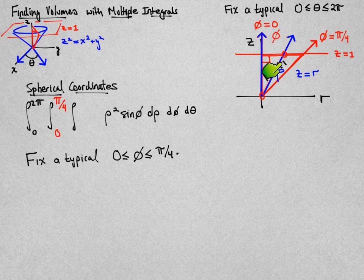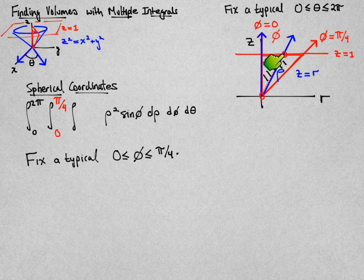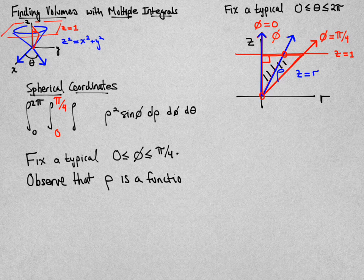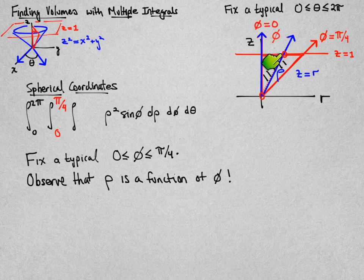That point, that distance there, is going to depend on what the current value of phi is. So the most important thing here to observe is that rho, its limits of integration, its upper limit of integration in particular, will be a function of the angle phi.